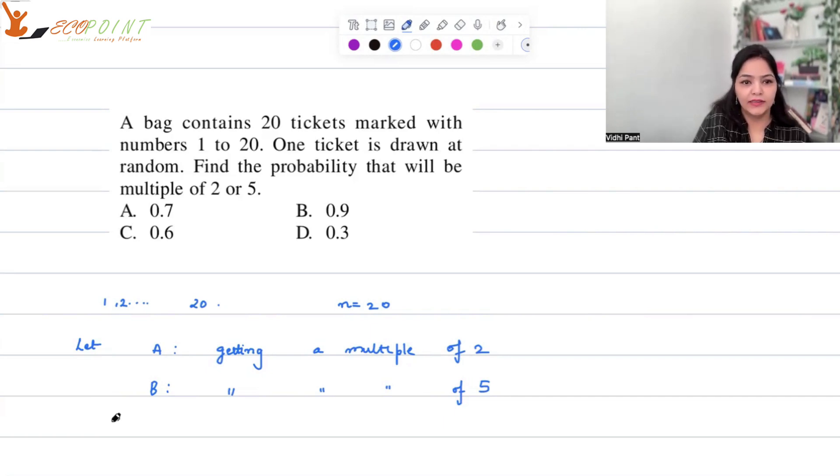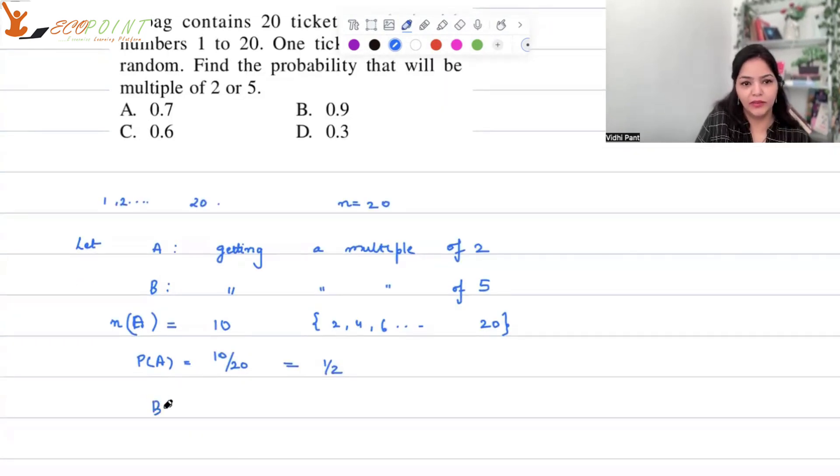Event A has 10 entries in it - there are 10 multiples of 2, that is, you have 2, 4, 6, all the evens, 10 even numbers. So probability of A is equal to 10 upon 20, that is 1 by 2. Now probability of B: B would consist of 5, 10, 15, 20. So probability of B is equal to 4 by 20, that is 1 by 5.